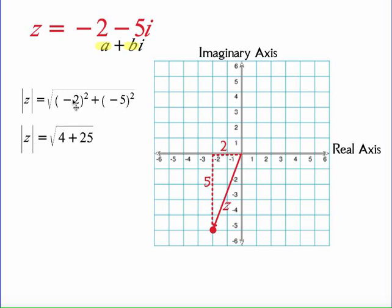So negative 2 or 2 squared becomes 4. Negative 5 squared becomes 25. Adding the two together, I get the square root of 29, and that's a couple of decimal points, approximately 5.39. The length of line Z is approximately 5.39, and that's our modulus.